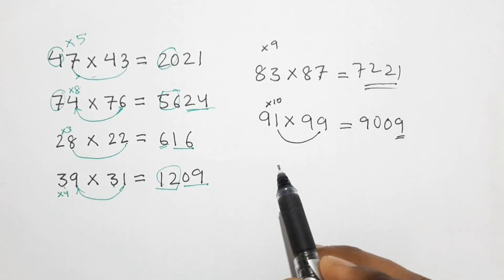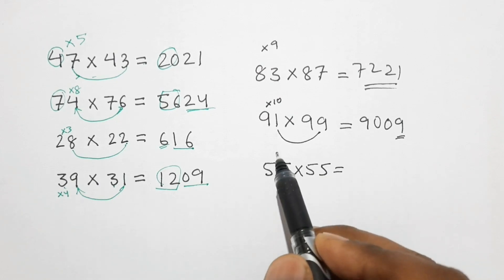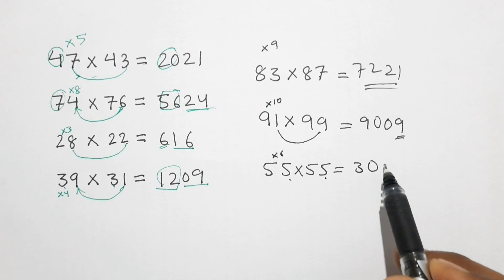Let's take one more example, that is 55 into 55. So here also 5 into 6 is 30, and 5 into 5 is 25.